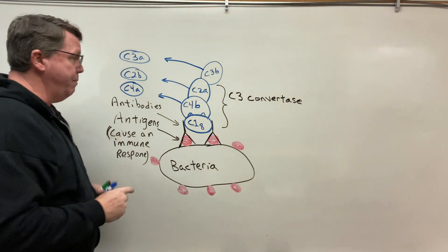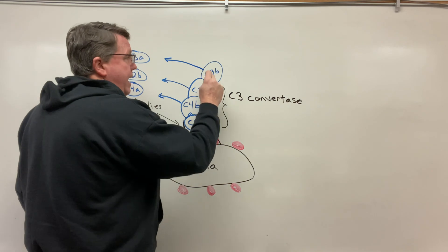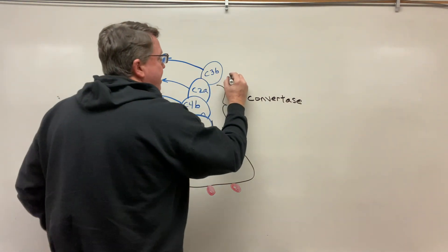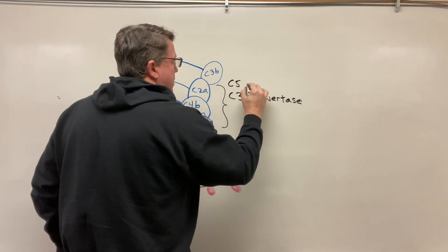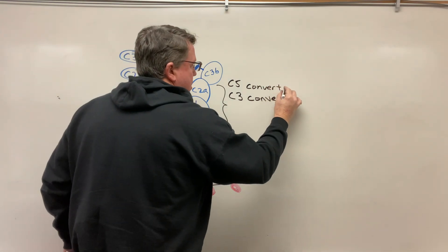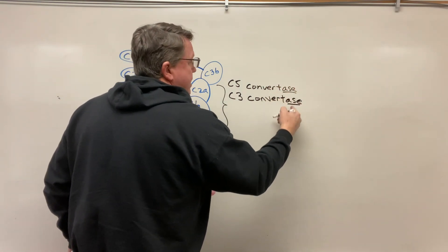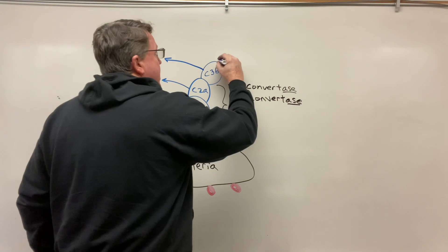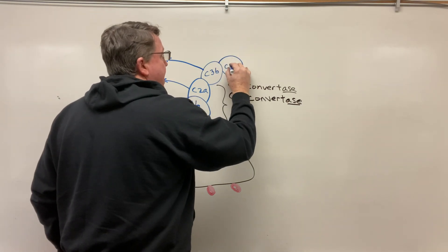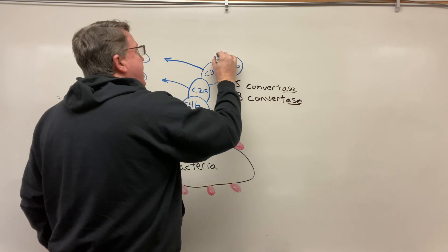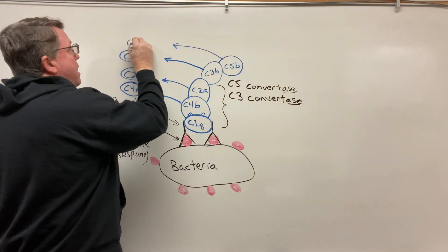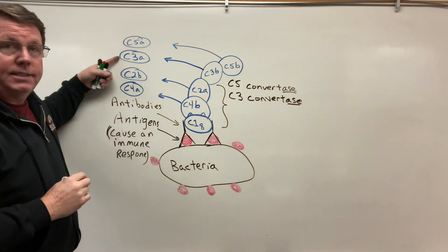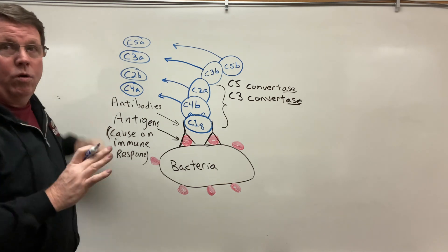The next thing that's going to happen is now I have my C4B, my C2A, and my C3B. These now make up something called C5 convertase. Now I'm going to have C5 come over, and C5 is also going to be cut — there's my C5B, and my C5A is going to leave also. We're going to come back to these because they are going to play an important role in the complement system.